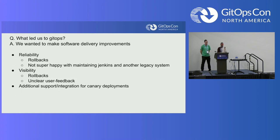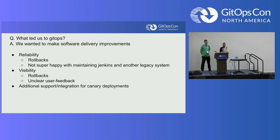So what led us to GitOps? We wanted to make software delivery improvements. Starting at a new company, we noticed three main things come up. The first being reliability. There were a couple of rollback and bug issues on our legacy system, which we called Houston. This legacy system would call into Jenkins, and Jenkins would do the actual work — and it just didn't always work, and developers were not happy.